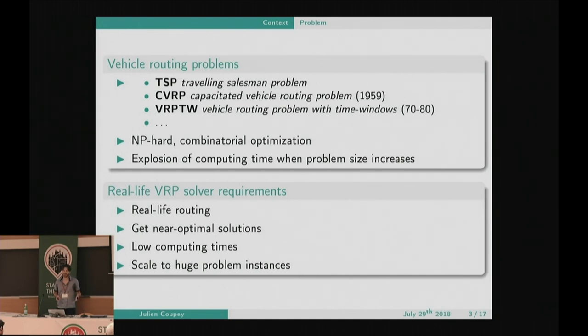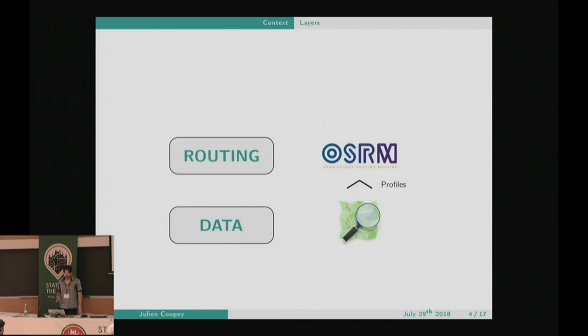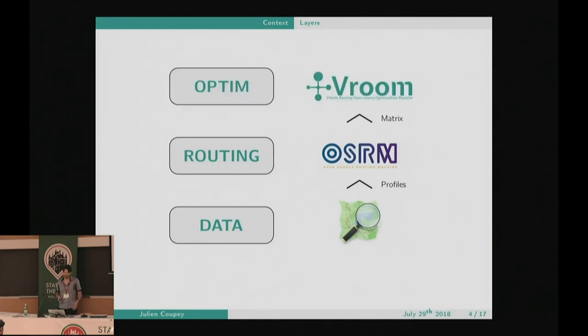They focus on the optimization and take the travel times as granted. Getting an optimal solution is usually out of reach, so we don't really care about optimal solutions — we want solutions that are good enough. One very important thing is we want to maintain computing times very low, because it makes the solver easier to use and enables scaling to solve huge problems. We rely on OSRM for all routing matters. You can configure routing with profiles, and we add another optimization layer on top, taking the cost matrix computed by OSRM as input.